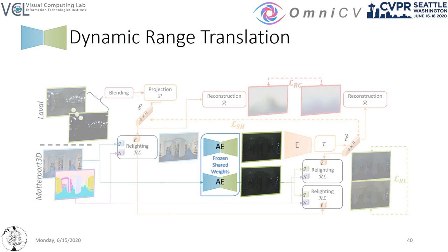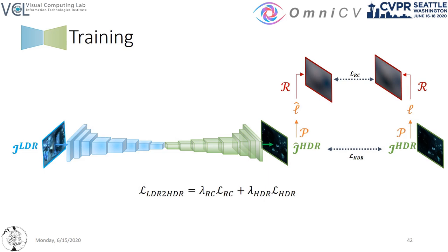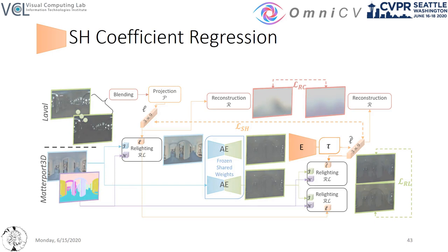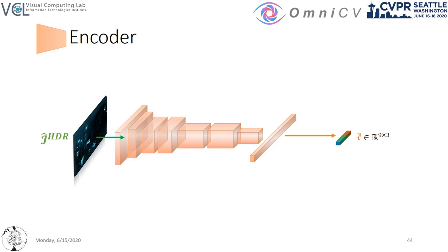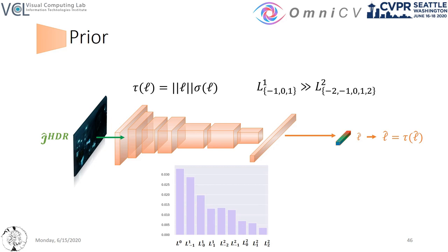Regarding the dynamic range translation, we train a UNet-style autoencoder using the Neural Illumination dataset of coupled LDR and HDR images. It is supervised with two reconstruction losses: on the raw HDR image and on its low-frequency representation after projection and reconstruction. This module is trained separately, and its parameters are then frozen, with its output fed to the lighting encoder, which regresses an RGB spherical harmonic representation of the estimated lighting. We impose a prior on the predicted spherical harmonics coefficients, taking into account that higher frequencies correspond to smaller values, as evident by the Laval dataset's mean coefficients. Then we use a de-ringing low-pass filter on the predicted coefficients to eliminate ringing artifacts.